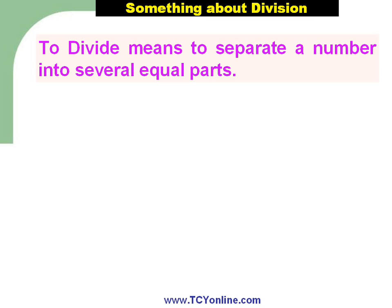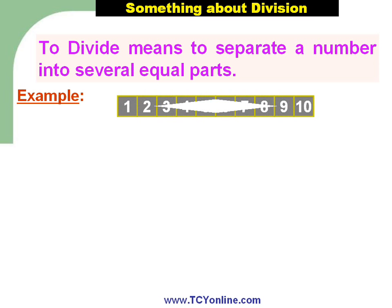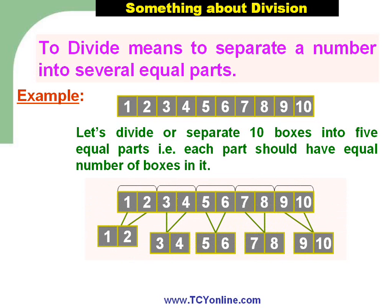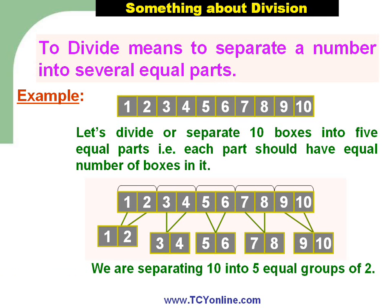For example, I have 10 numbered boxes and I want to separate or divide 10 boxes into 5 equal parts, such that each part should have an equal number of boxes in it. So 1 and 2 is separated into one part, 3 and 4 into the second part, 5 and 6 into the third part, 7 and 8 into the fourth part, and 9 and 10 into the fifth part. So we are basically separating 10 into 5 equal groups of 2, which means 10 divided by 5 is simply 2.